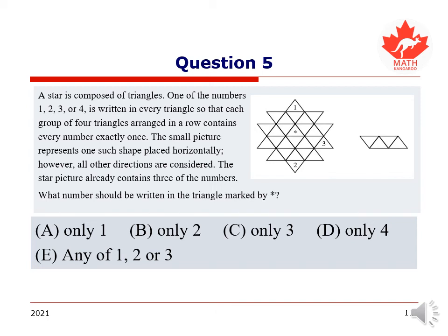What number should be written in the triangle marked by a little asterisk? A. Only the number 1. B. Only the number 2. C. Only the number 3. D. Only the number 4. Or E. Any of numbers 1, 2, or 3.